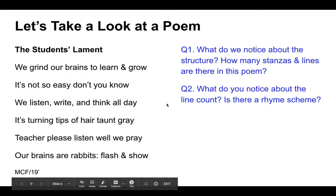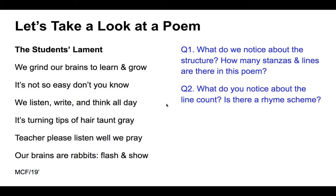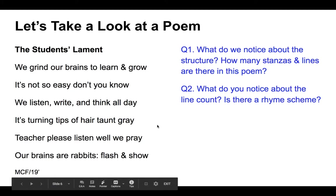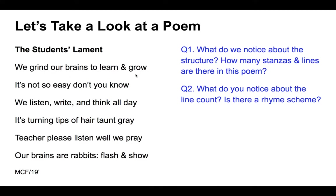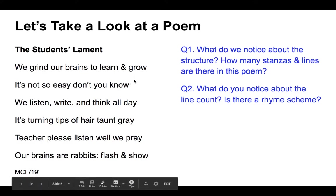Step two: what do we notice about the line count and is there a rhyme scheme? We've established there are six lines. Looking at the last word of each line, we've got: grow, know, day, gray, pray, show. We assign alphabet letters to words that rhyme — grow and know rhyme, so that's A A. Then day, gray, and pray all rhyme, so B B B. Finally, show also rhymes with no and grow, giving us a rhyme scheme of A A B B B A.